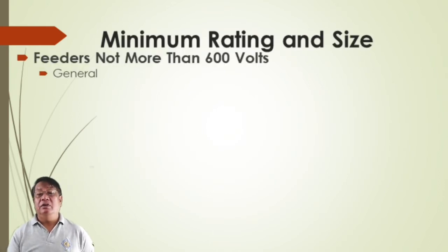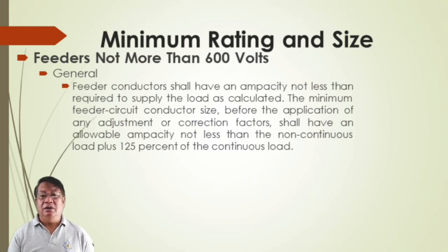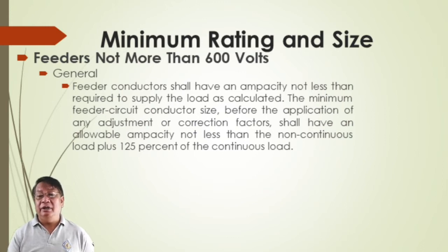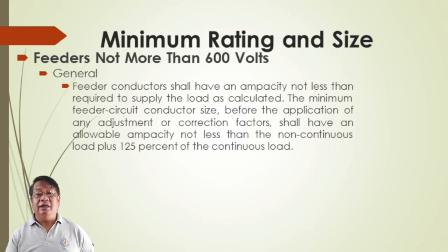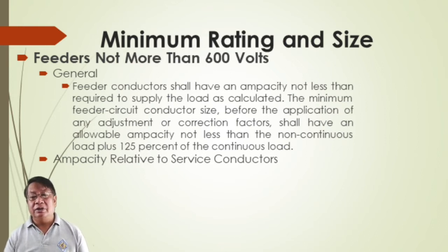Not more than 600 volts minimum rating on sizes of the feeder or conductor used to supply the branch circuit. It shall have an ampacity not less than required to supply the load as calculated. The minimum feeder circuit conductor size allowable ampacity is not less than the non-continuous load plus 125% of the continuous load. That is the general rating for not more than 600 volts systems.